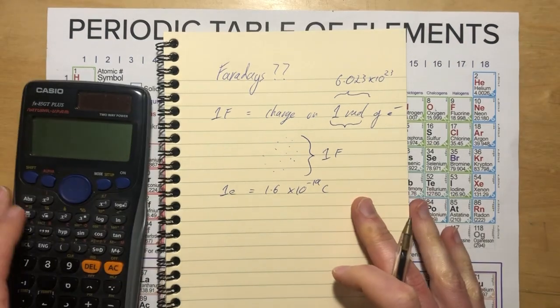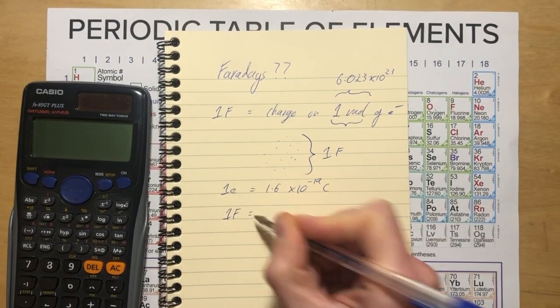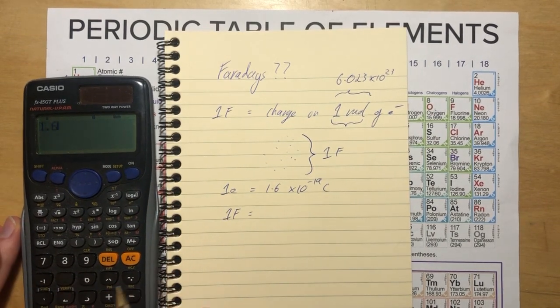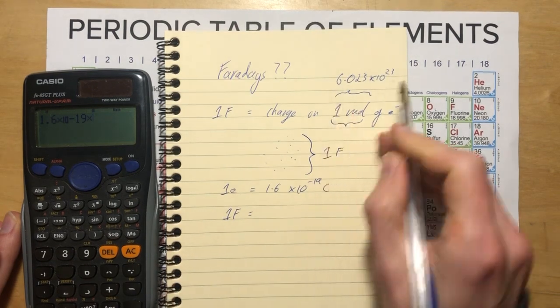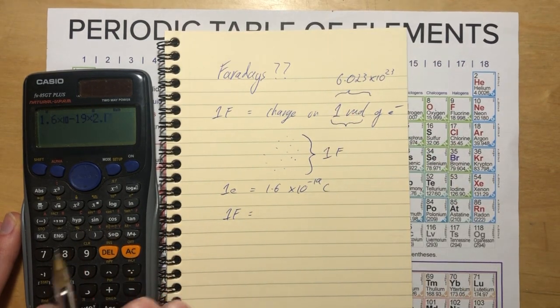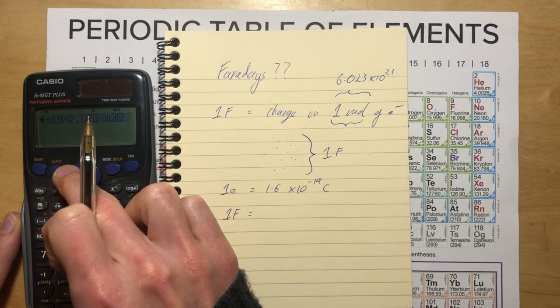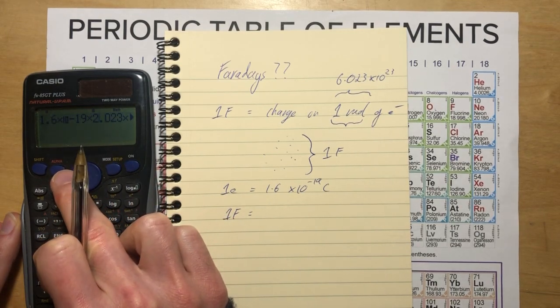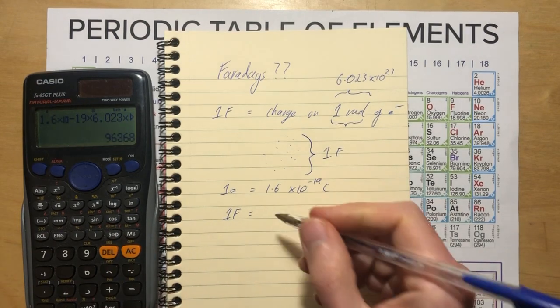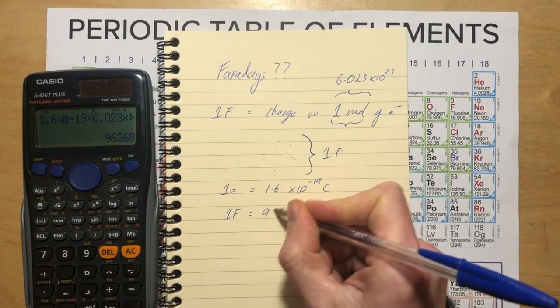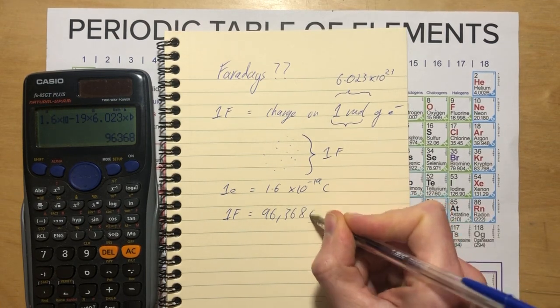And so we can just figure out what one Faraday is by multiplying those two together. So an elementary charge, 1.6 times 10 to the minus 19, multiplied by Avogadro's number, 6.023 times 10 to the 23. And that comes out to be 96,368 Coulombs.